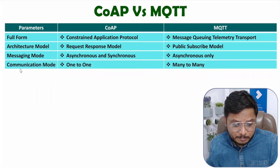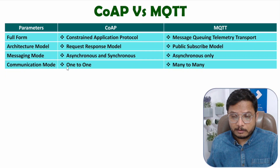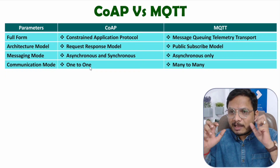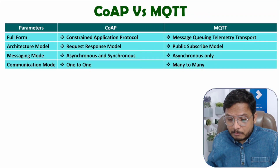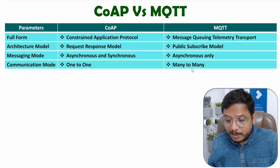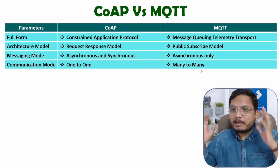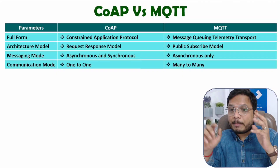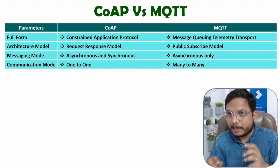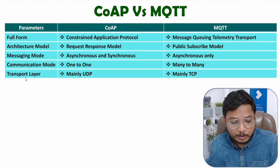The next parameter is Communication Mode. In CoAP, it is 1-to-1. There will be a Client and a Server, so 1-to-1 communication happens. But in MQTT, many-to-many communication happens. There will be many Publishers and many Subscribers, so many-to-many communication happens via the broker. So MQTT follows many-to-many communication.